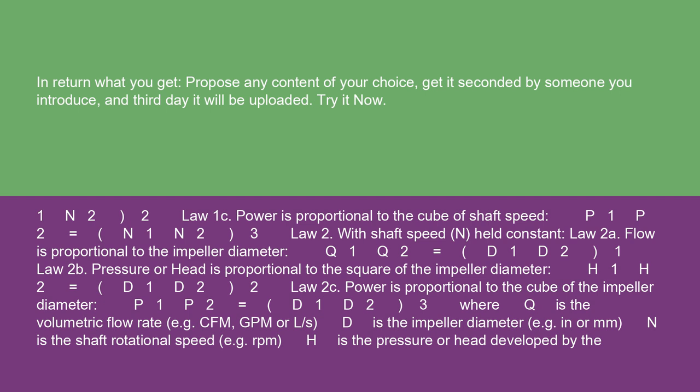Law 2A: Flow is proportional to the impeller diameter. Q1/Q2 equals D1/D2. Law 2B: Pressure or head is proportional to the square of the impeller diameter.